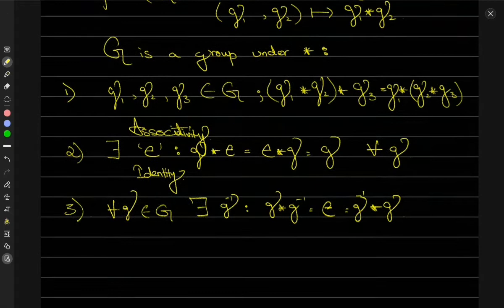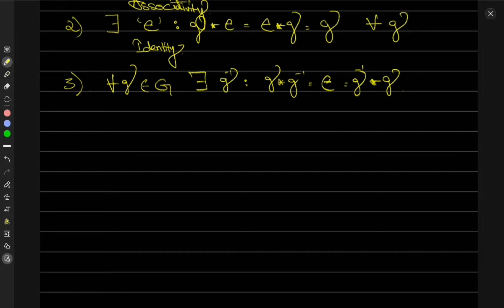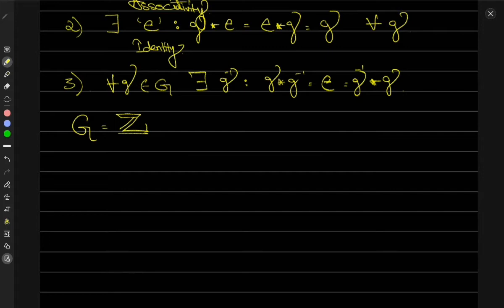Let me give you an example which will make things completely clear. These are very simple things — you think about them all the time without applying mathematics, but you're familiar with what a group is. Suppose I have a set G which is a set of integers, denoted by the symbol Z. We also have elements G1, G2, and G3 that belong to this set of integers Z.